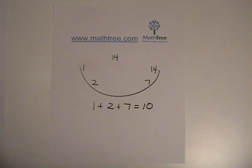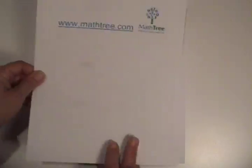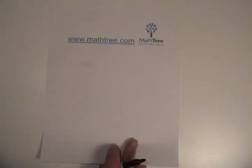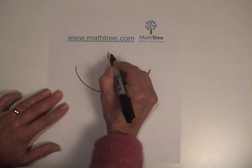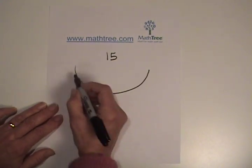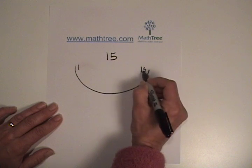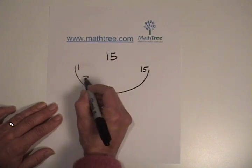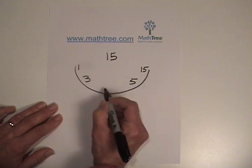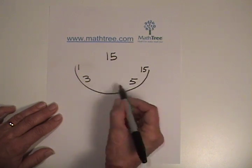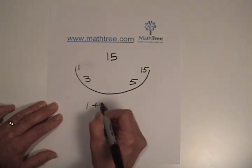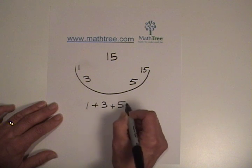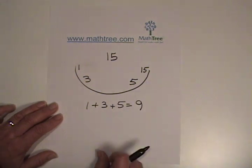We'll try 15. Make that smile. Now, this is happy math, 15. 1 times 15 works, 2 doesn't go, 3 times 5 works, 4 is not a factor of 15, and we've already got 5, so we know we're already done. 1 plus 3 plus 5 equals 9. That's less than 15, so 15 is not abundant.